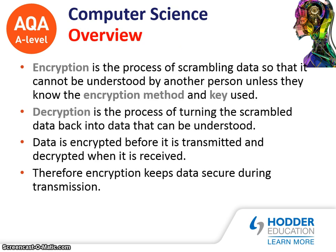Encryption is the process of scrambling data so that it cannot be understood by another person, unless they know the encryption method and the key that is being used. It's the process of turning plain text into scrambled cipher text. Plain text is the text that we as human beings can understand, and cipher text is that encrypted text that we can't understand. Decryption is the process of turning the scrambled data back into data that can be understood. Data is encrypted before it's transmitted and decrypted when it's received.